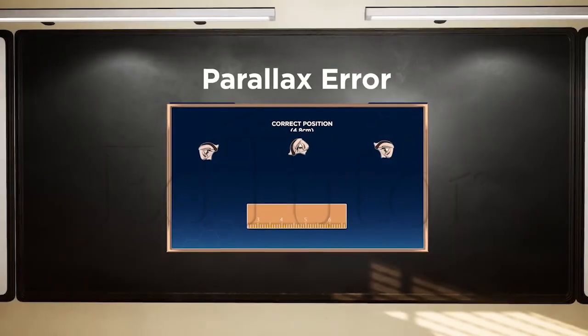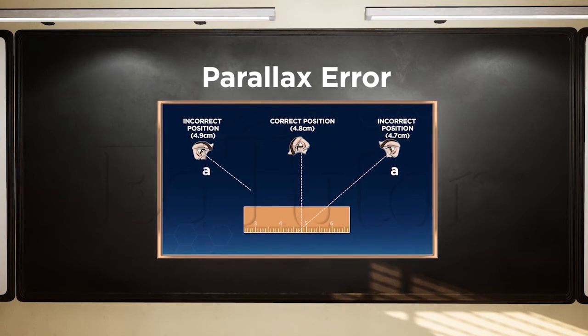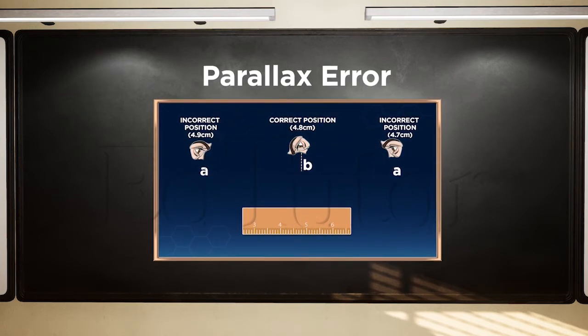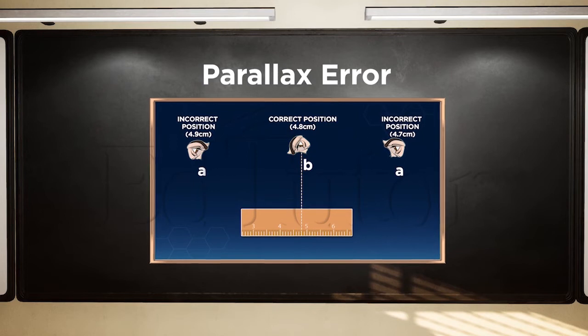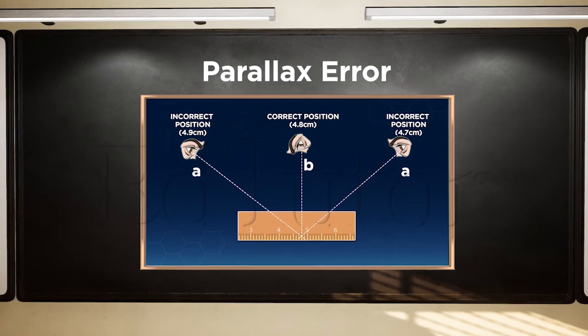The image on this side shows the parallax error in A. The correct way to take a reading is demonstrated in B. It is an error in a measurement when the eye is not placed in the correct position when taking a reading.